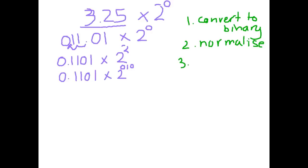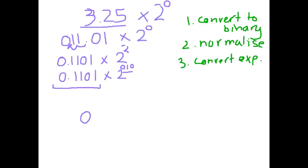Now we have all the information to put this into a word. Using an 8-bit word with 1 bit for the sign of the mantissa, 3 bits for the exponent, and 4 bits for the normalized mantissa: the mantissa is positive so the sign bit is 0; the exponent in 2's complement is 010; and the normalized mantissa is 1101. That is our conversion of 3.25.